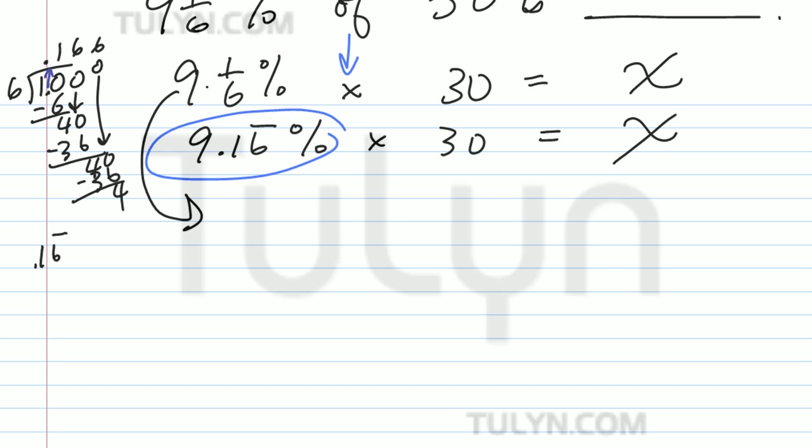So 9 times 6 plus 1 is 54 plus 1 is 55 over 6. And percent means divide by 100, so let's divide by 100.